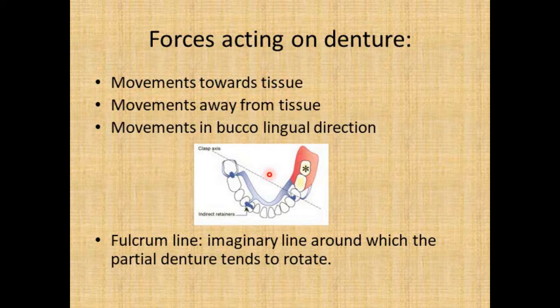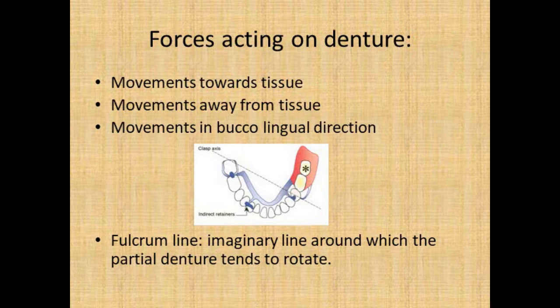In the figure you can see this is a case of Class II distal extension removable partial denture. The indirect retainer takes the form of a rest on the opposite side of the fulcrum line. Most tooth-borne partial dentures do not exhibit rotational movement because they have extensive tooth support. But in Class III or Class IV partial dentures with mobile abutments, rotational movement occurs and the indirect retainer is useful.